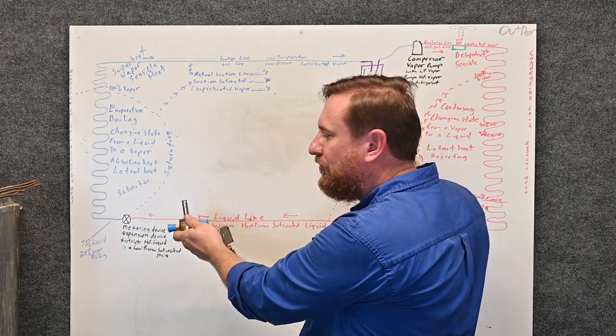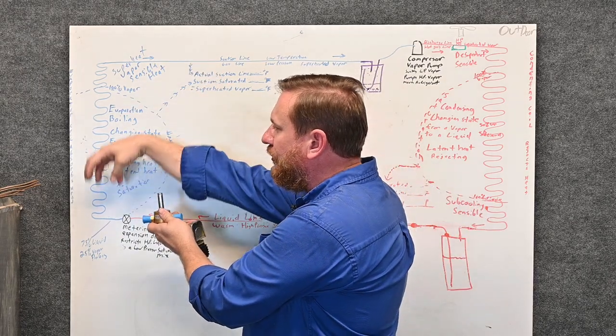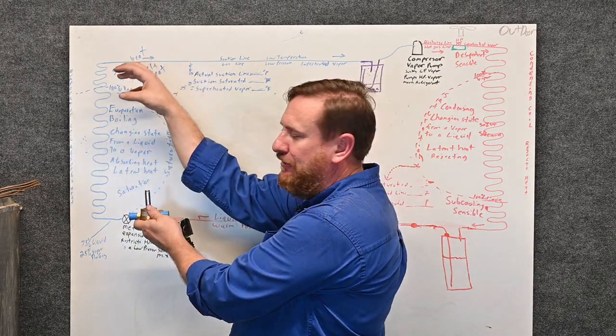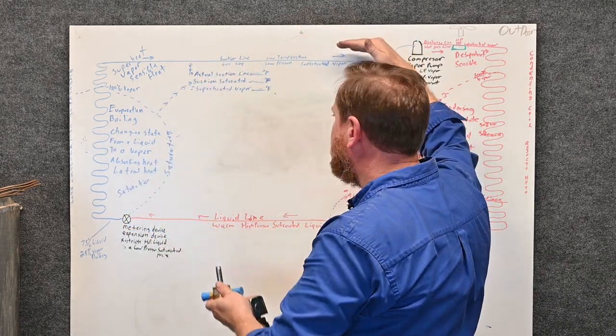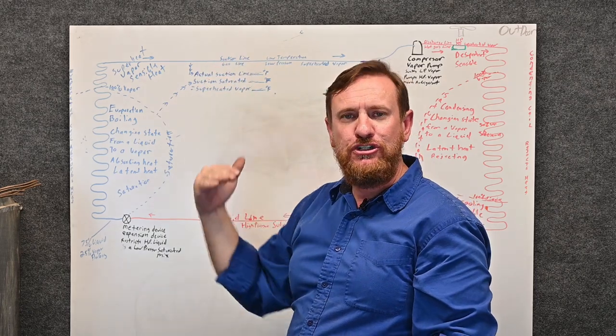But the compressor continues to run. So the compressor pulls all the refrigerant out of the evaporator coil because it's all stopped here. As it pulls all the refrigerant out of the evaporator coil, the suction pressure starts to drop.